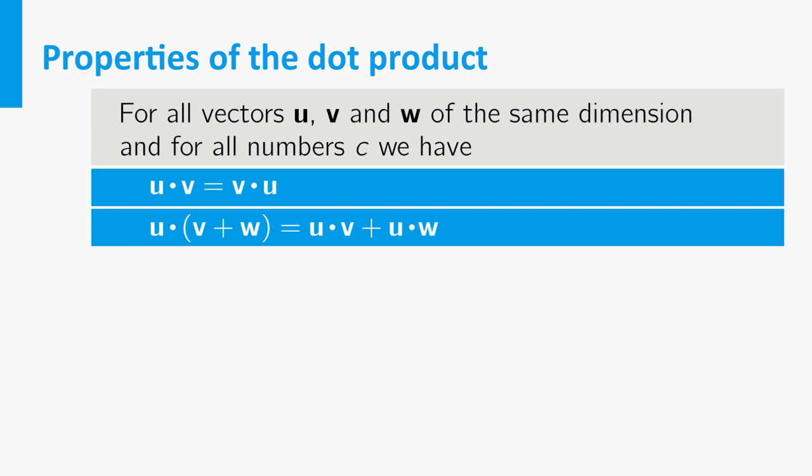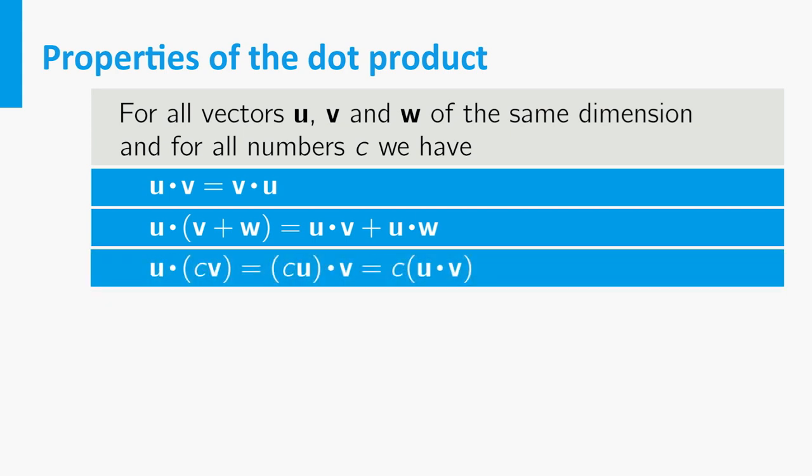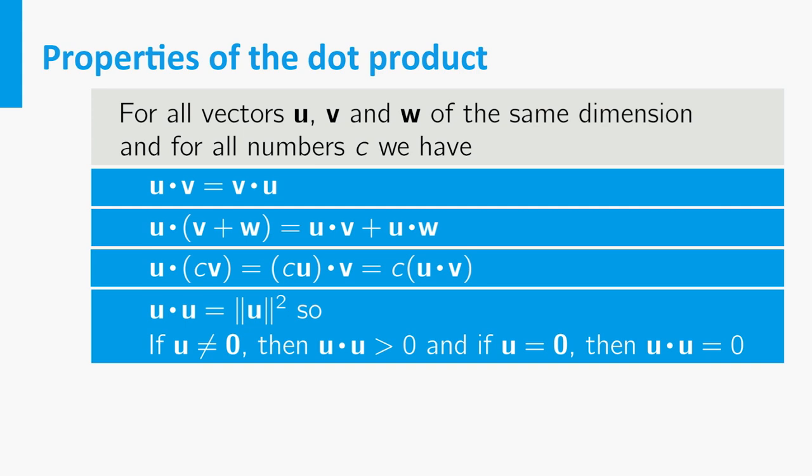The third property states the connection between dot product and scalar multiplication of vectors. The fourth property, which is somewhat different, is easy to understand. Think about it. It states that the dot product of a vector and itself equals the square of its length. A property that you are going to use often.